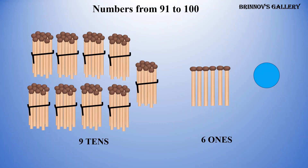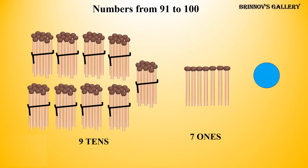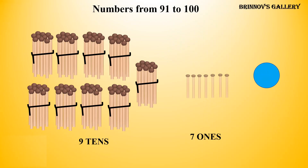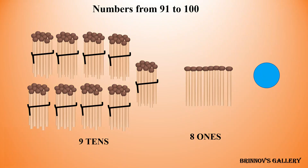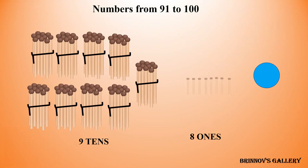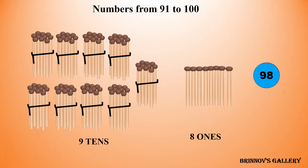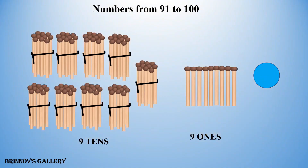9 tens, 6 ones — 96. 9 tens, 7 ones — 97. 9 tens, 8 ones — 98. 9 tens, 9 ones — 99.